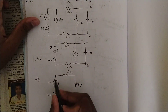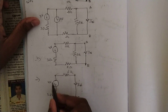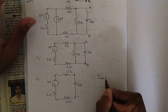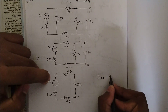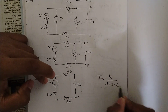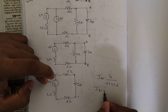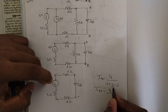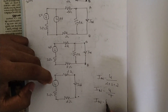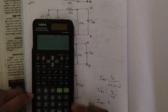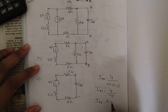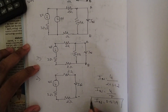All three resistors (3 ohm, 2 ohm, 2 ohm) are in series, giving a total of 7 ohm. Norton's current IN = V/R = 4/7 ≈ 0.57 ampere.